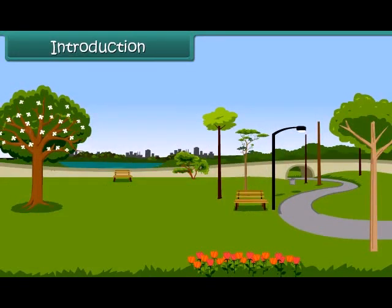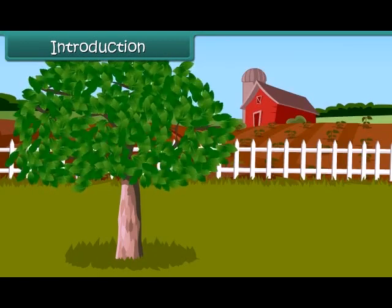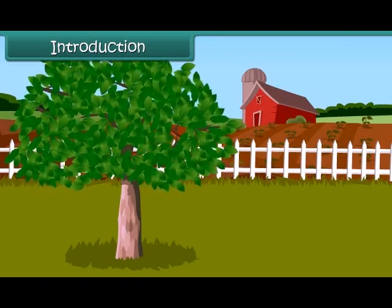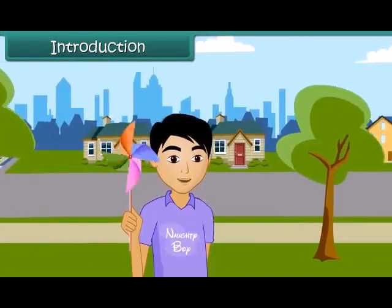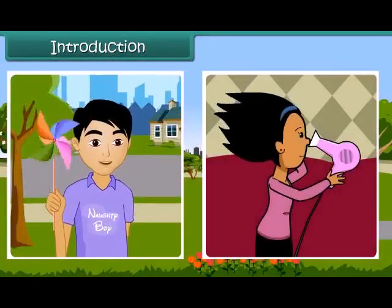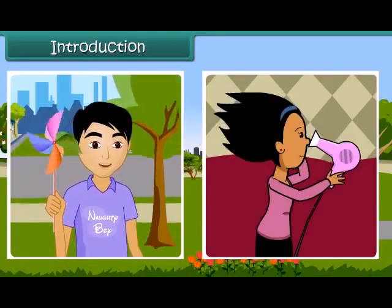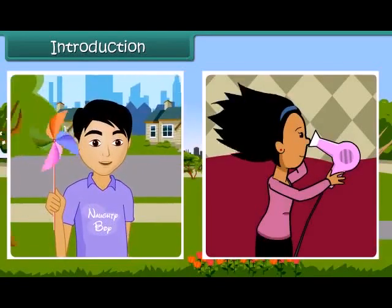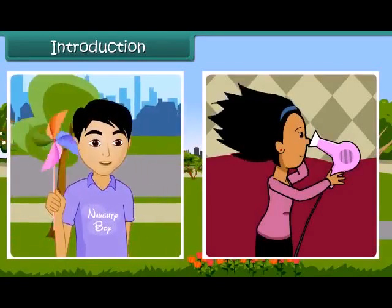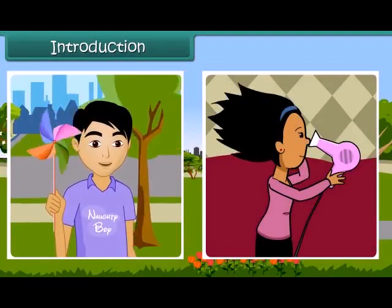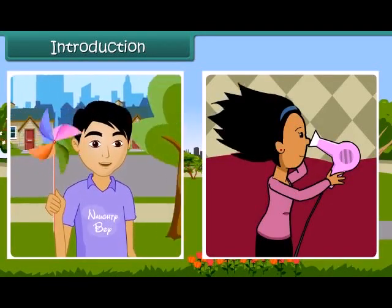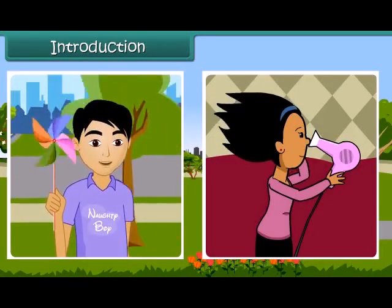Dear friends, do you have any idea as to how a kite flies? How do the leaves of a tree move? Or have you ever played with a paper windmill? How does this happen? Friends, this happens due to the movement of air. Air is present everywhere around us and we can feel it.